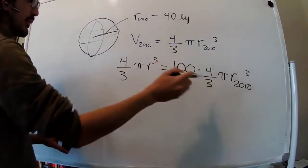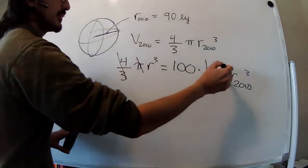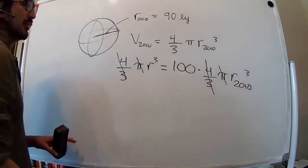So we have the 4/3 on both sides, we can get rid of them. We also have the pis. And so we end up with...